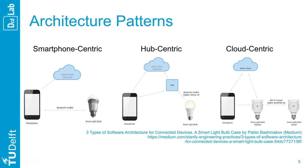The communication layer opens up the landscape from a single device to a network of things. A system architecture is the conceptual model that defines the structure and behavior of a system. It helps design and communicate about it. An architecture description is a formal description and representation of a system organized in a way that supports reasoning about its structures and behaviors. In this context, we recognize three main architecture patterns for connected devices, illustrated here in the context of domestic connected light bulbs.